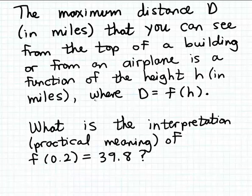We would write that the quantity D, that's the maximum distance that you can see, equals f of h. We're using f here as the name of this function, and so this equation tells us that the distance is a function of the distance you can see is a function of the height.